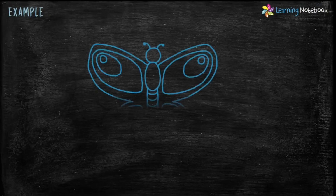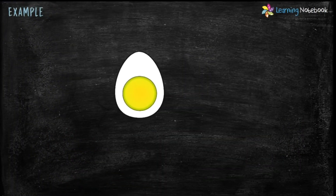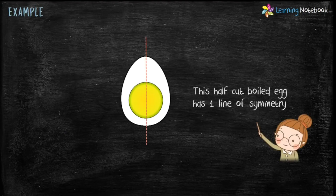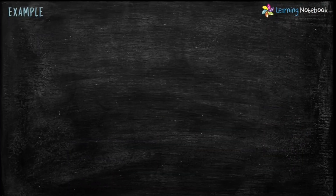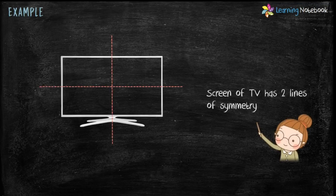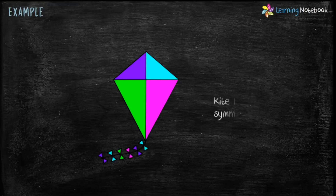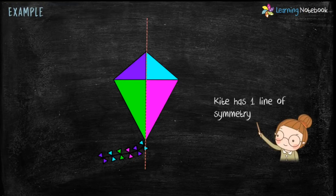Let's take some real life examples to understand line of symmetry. For example, a butterfly has one line of symmetry. Next, a boiled egg cut in half has one line of symmetry. Next, a screen of TV has two lines of symmetry. Next, a kite has one line of symmetry.